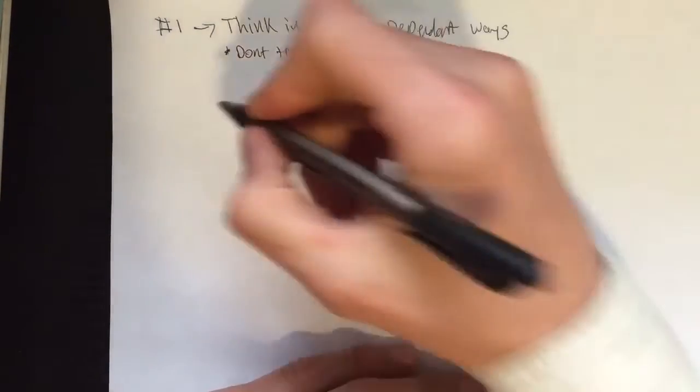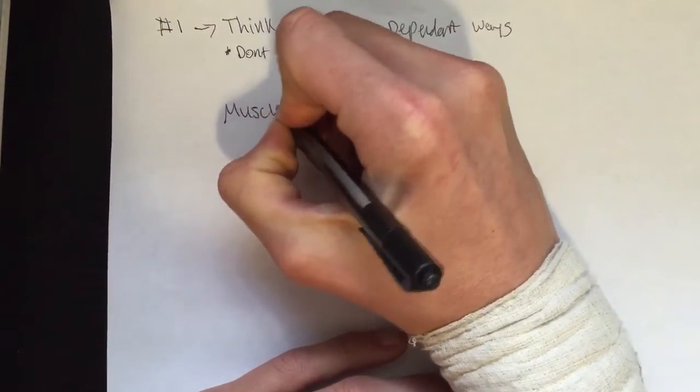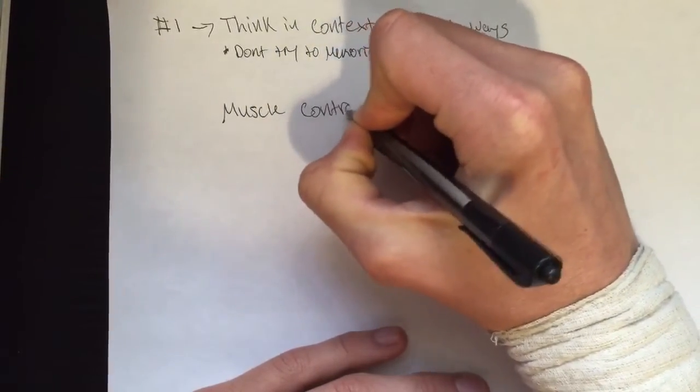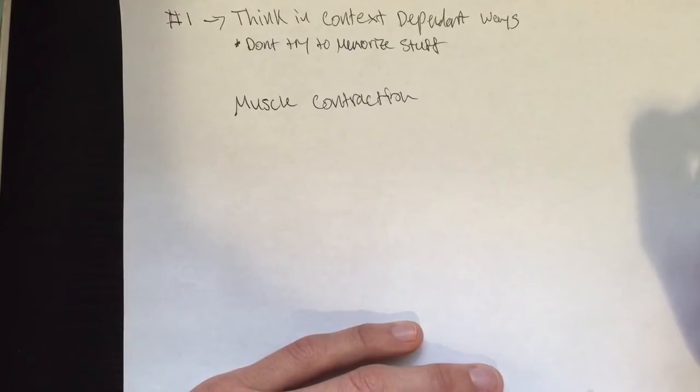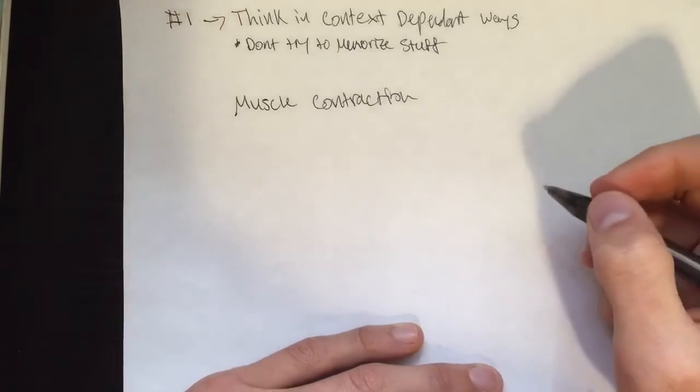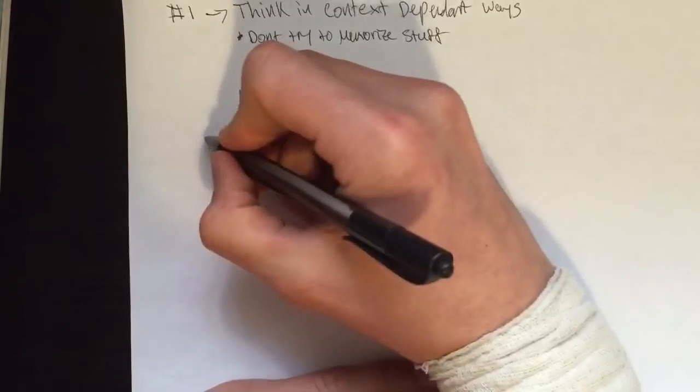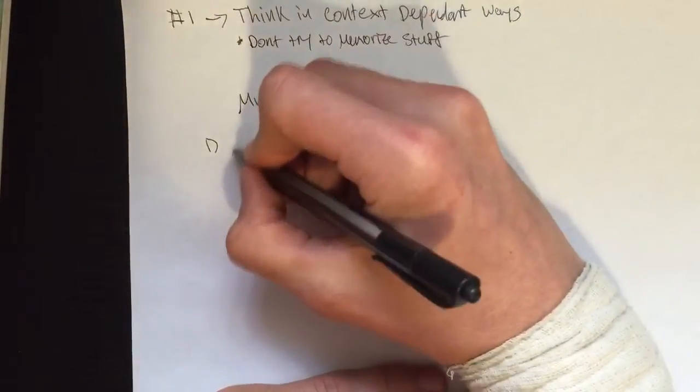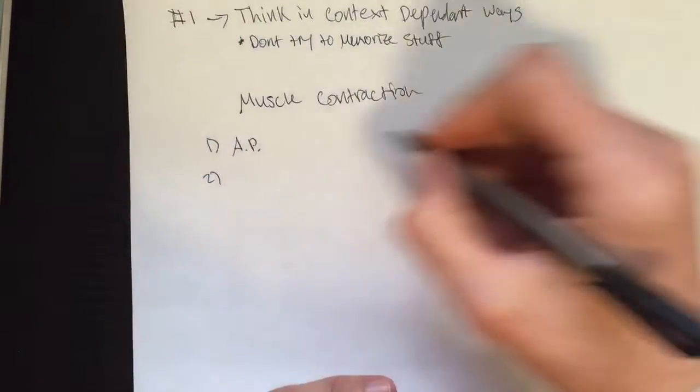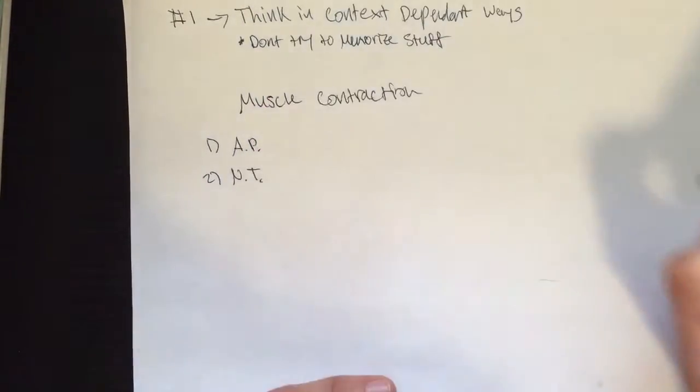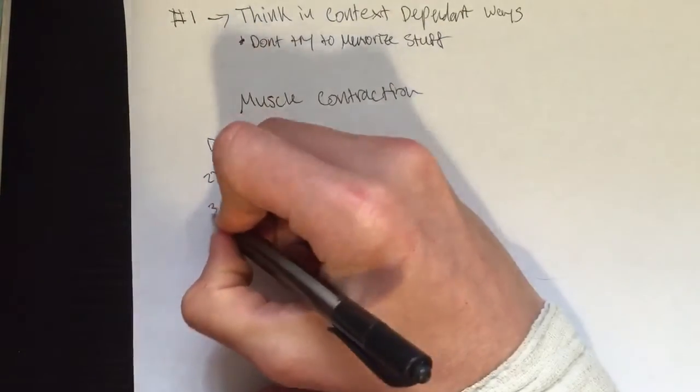The next thing I do is I think of a concept and I try to break it down. I might think of muscle contraction and what it means. The first thing I'll do is just start writing down all the things I know about muscle contraction. I know it takes an action potential, and I know that it takes the release of neurotransmitters. For muscles, that's ACH.